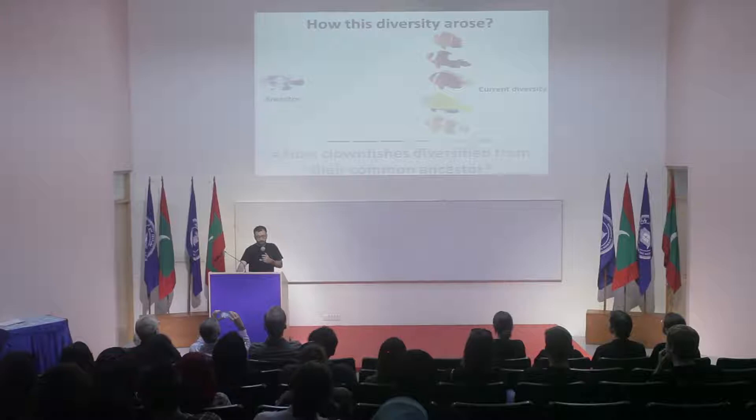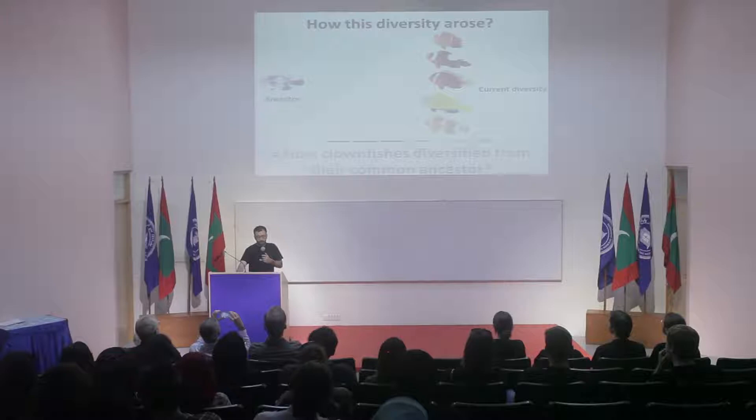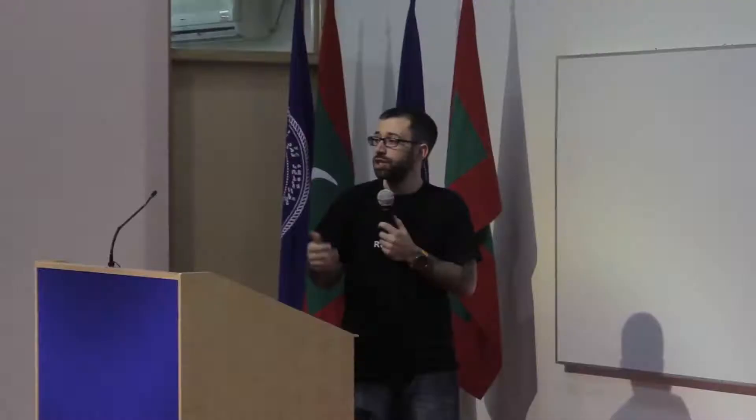In terms of scientific question, we want to know how all the clown fishes we have today diversified from common ancestors. We consider the diversity we observe nowadays and want to go back in the past and try to know how these fishes diversified. We don't know what the ancestor looked like because it probably disappeared, but we would like to understand the processes.